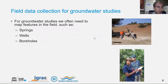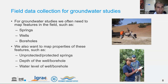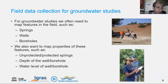As groundwater specialists, you know that not all the data you need is available online. Everything we learned yesterday is very useful, but a lot of data is probably lacking and you need to go out there in the field. For groundwater studies, you often need to map features such as springs, wells, and boreholes. We also want to link other properties — for springs, whether they are unprotected or protected; for wells or boreholes, the depth, water level, and elevation. In the end, we can further process this data into groundwater models or do other things with it.